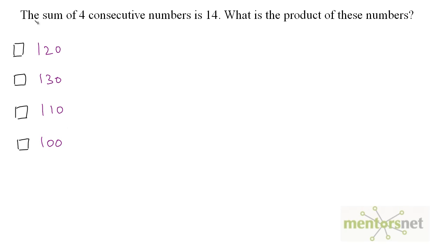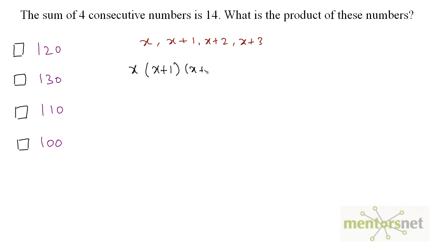Now the final question. The sum of four consecutive numbers is 14. What is the product of these numbers? If the first number is x, then the next are x + 1, x + 2, and x + 3. What is asked is the product: x × (x+1) × (x+2) × (x+3). What is given is the sum: x + (x+1) + (x+2) + (x+3) = 14.